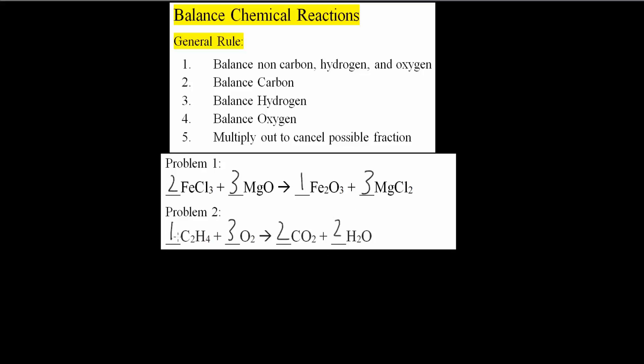And let's put a 1 in the front. So let's actually check this last one. So 2 carbons, 2 carbons, 4 hydrogens, 4 hydrogens, 6 oxygens, 2 times 2 is 4, 4 plus 2 times 1 is 6. So everything is nice and balanced, and that's all we need to do for these 2 problems.